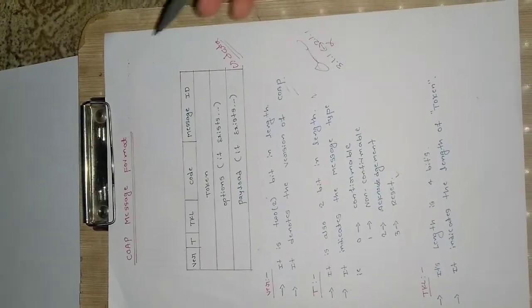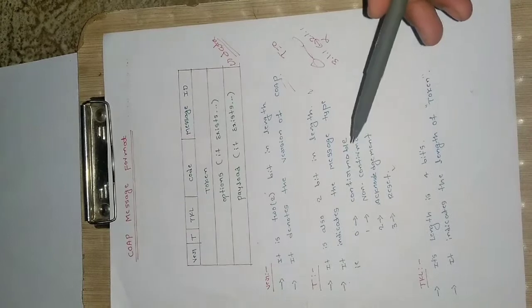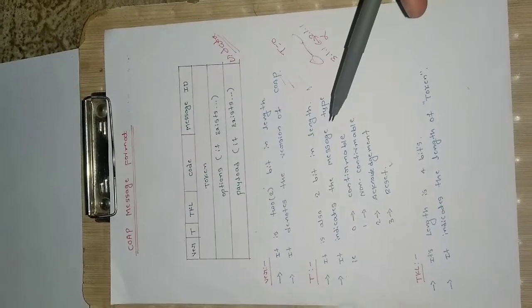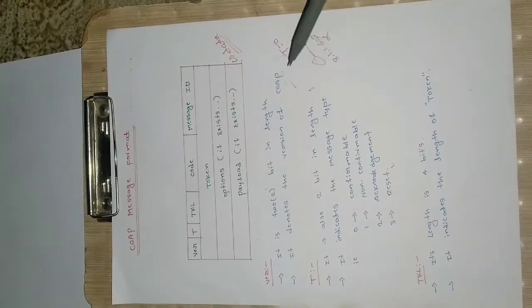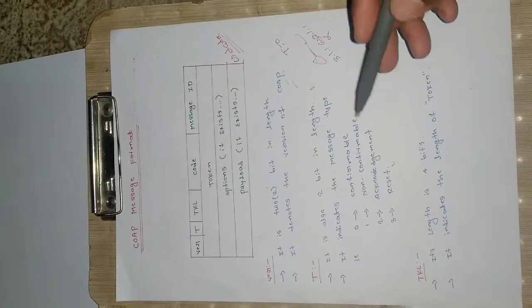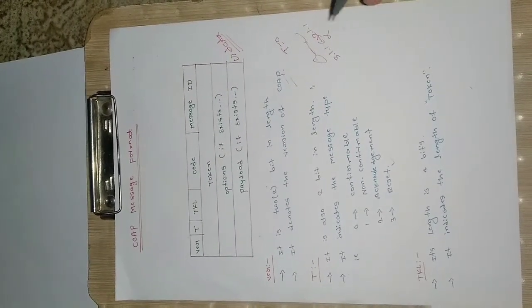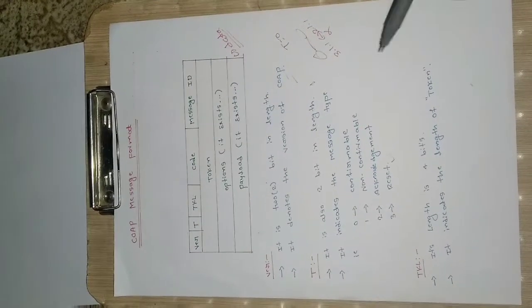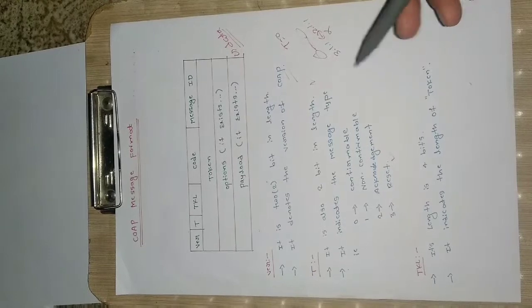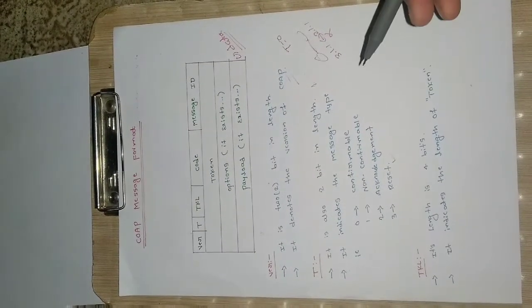If t equals zero, it indicates the present message is a confirmable message — it expects a confirmation or acknowledgement from the server. If t equals one, it is a non-confirmable message where the client will not be expecting any acknowledgement from the server. If t equals two, it indicates this is the acknowledgement for some request which has already been sent. And if t equals three, it is a reset.